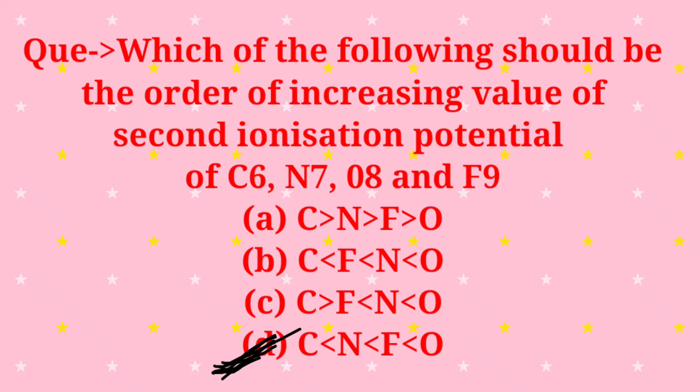Now the answer to this question is option D, which is our correct answer. That is, oxygen has greater second ionization potential than fluorine, than nitrogen, than carbon. I hope you understand the order of increasing value of second ionization potential in carbon, nitrogen, oxygen, and fluorine.